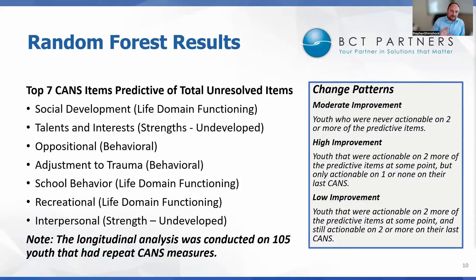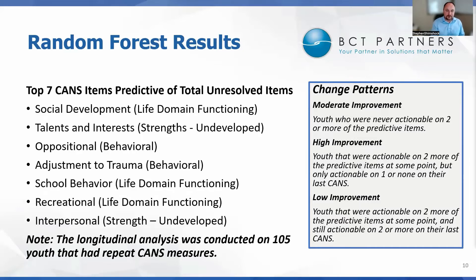We simplified these seven items into change patterns. Kids with moderate improvement never had two or more of these seven items at any given time. Kids with the highest level of improvement had two or more of these seven predictive items at some point during their care, but on their last CANS they had only one or none. Kids with the lowest amount of improvement had two or more of these actionable items at some point and continued to have two or more at their last assessment as well.